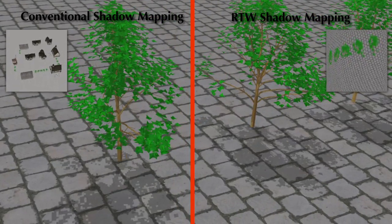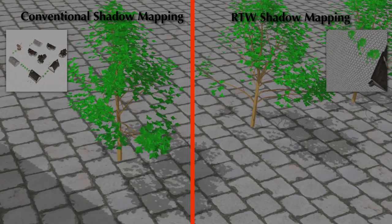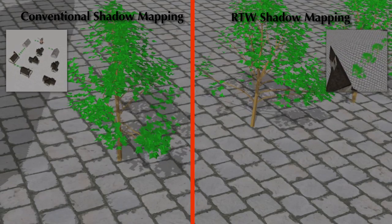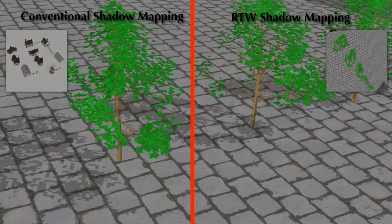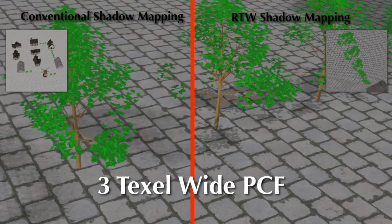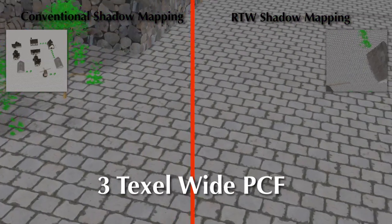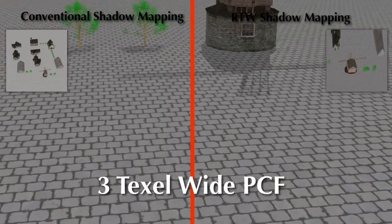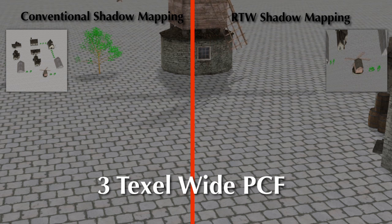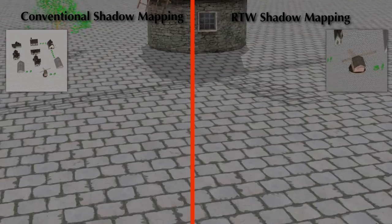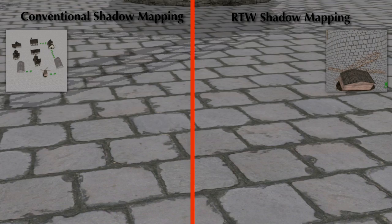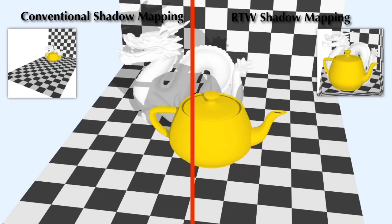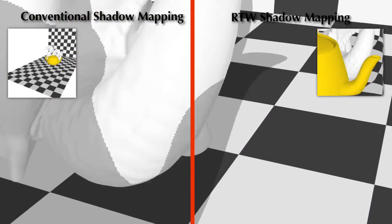Here we see support for dynamic lighting conditions. The system also supports percentage closer filtering for anti-aliased shadow edges. Here we see support for dynamic objects. The adaptive shadow maps also do a good job shadowing fast-moving objects.